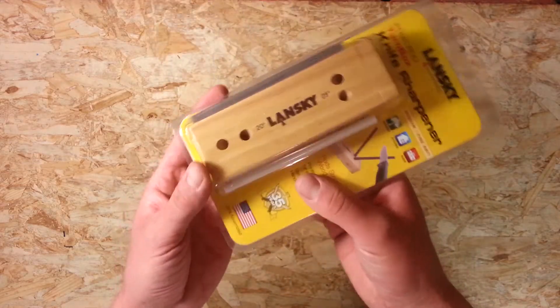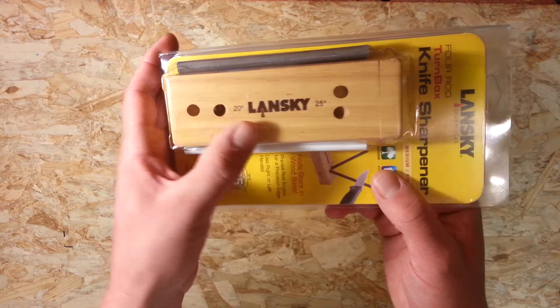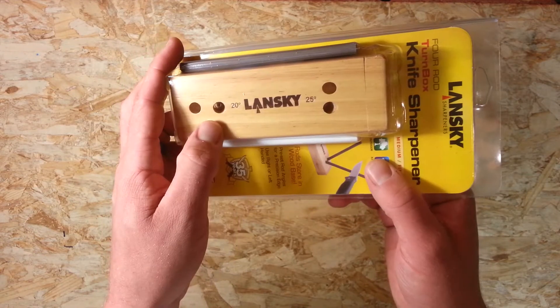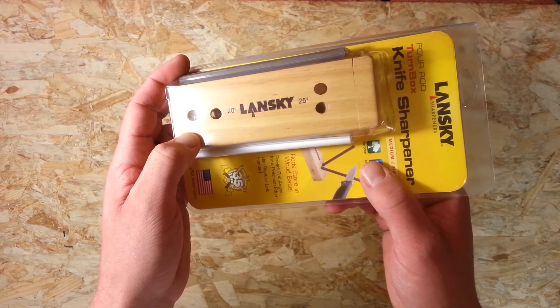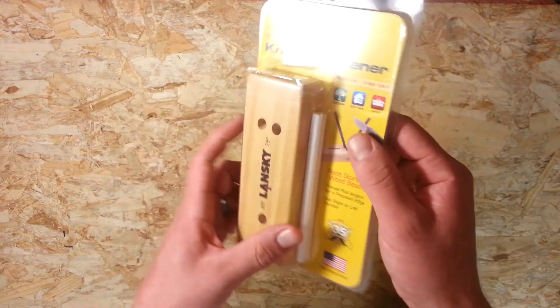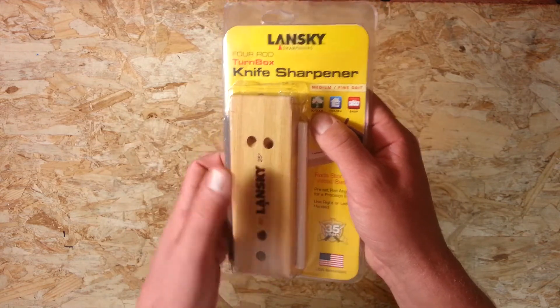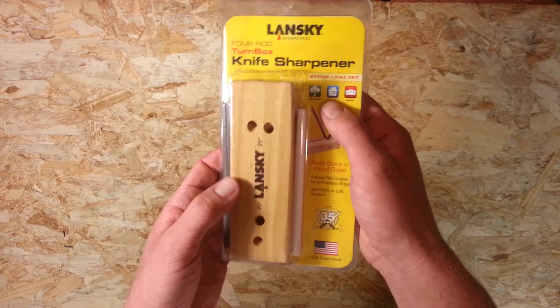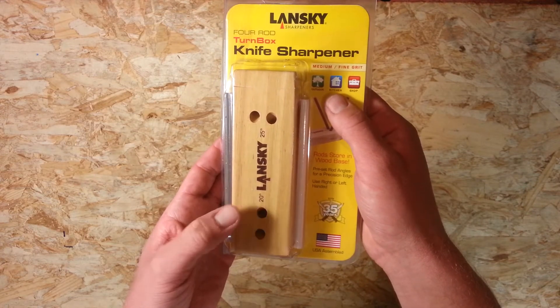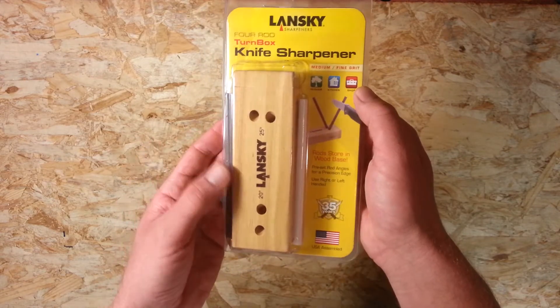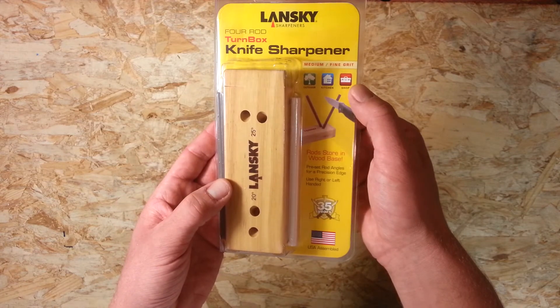This has a 20 degree and a 25 degree setting. It would be nice if it had a third setting for maybe a 15 or 17, something like that for a finer slicing knife. It is advertised for being good for outdoor knives, which you'd usually say be 25, sometimes 20, kitchen usually be 20, 17, 15, something like that, and shop knives, which again are going to be 25, usually maybe 20, depending on what sort of use you're putting it to.